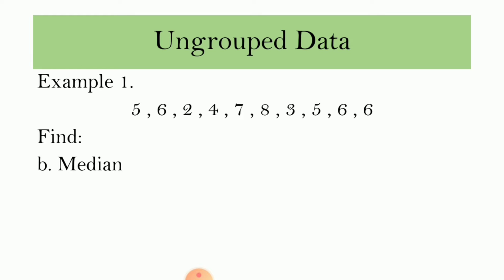Next is the median. The median is the middle value or the arithmetic mean of the two middle values. If there is only one middle value, that will be your median. However, if there are two middle values, you need to get the arithmetic mean of those two. First, let us arrange the data in ascending order: 2, 3, 4, 5, 5, 6, 6, 6, 7, and 8.